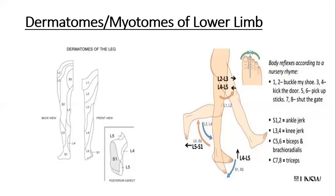Lumbar and sacral myotomes can be tested with the help of tendon reflexes, particularly if the patient is unconscious, in order to determine the level of damage. For patellar tendon reflexes we check L3 and L4, and by tapping the calcaneal tendon we check S1 and S2.